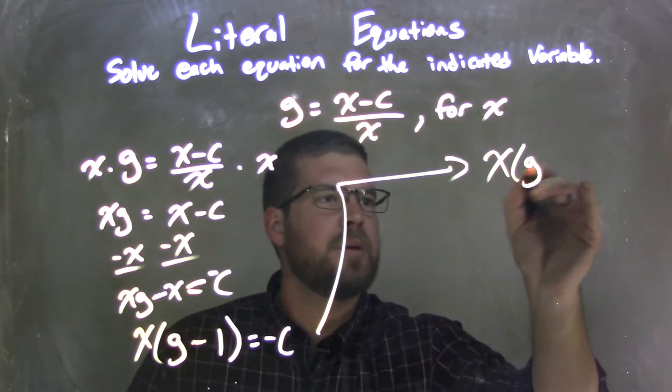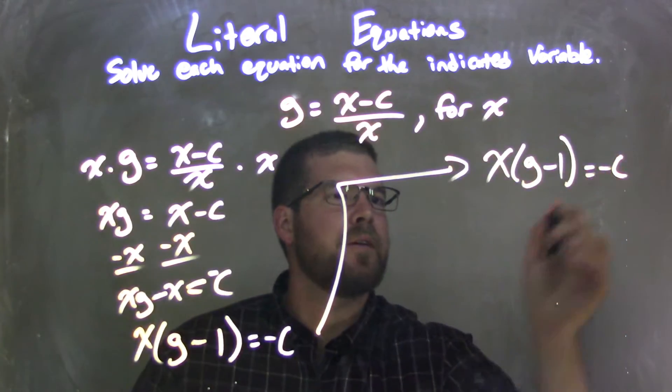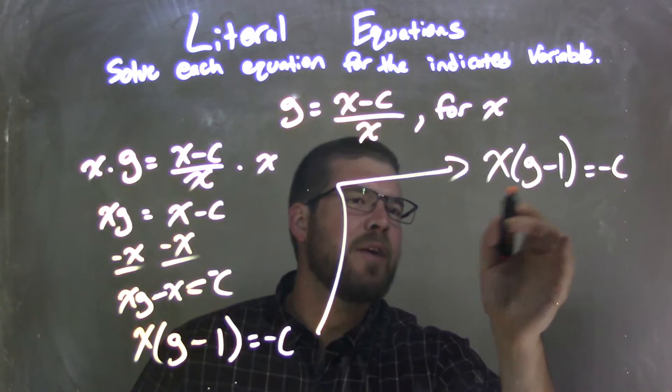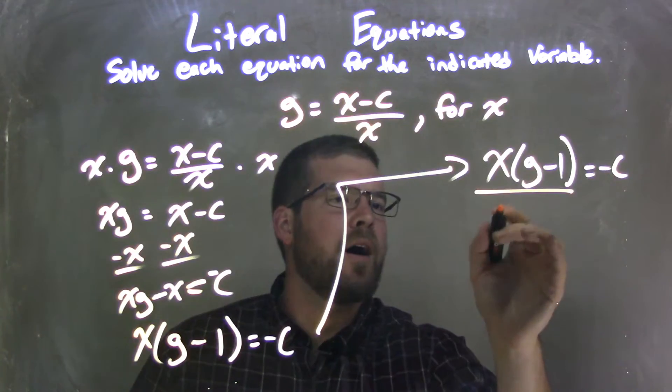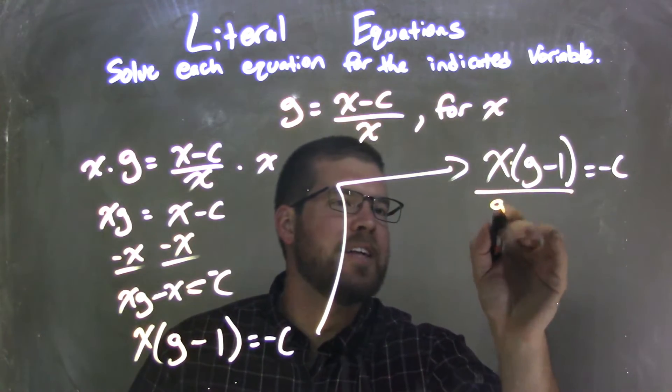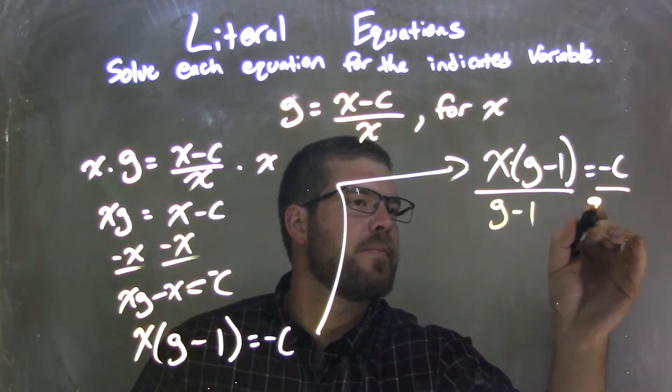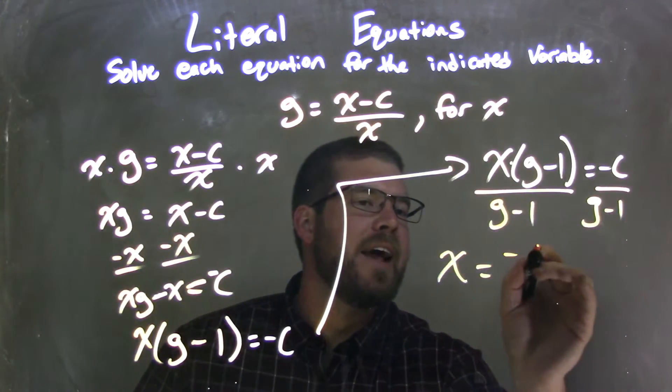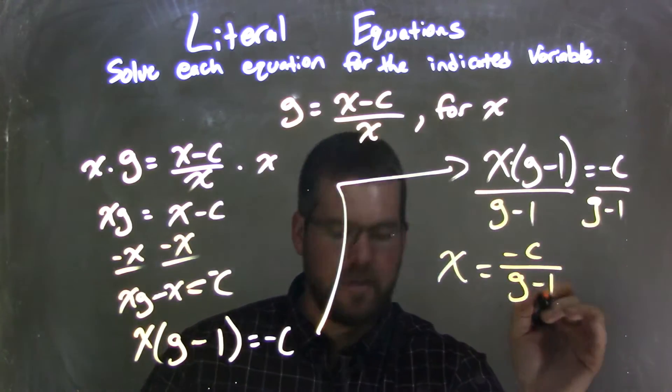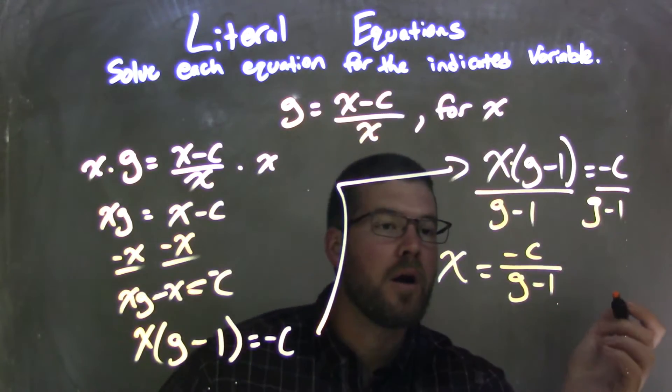x times g minus 1 equals negative c. Now I need to get rid of the g minus 1, or bring it over to the right-hand side, so I have x isolated. I'm going to divide both sides by g minus 1. That leaves me with x by itself, and negative c over g minus 1. There's our final answer.